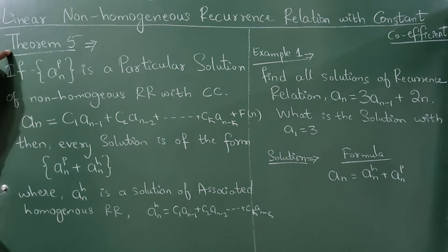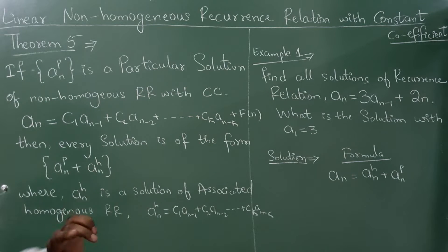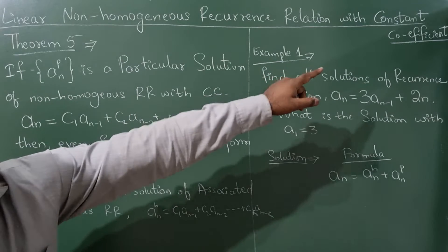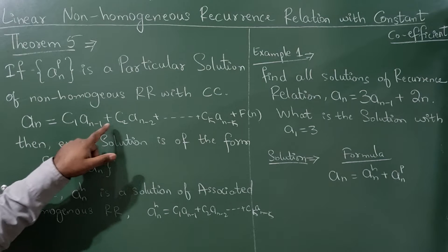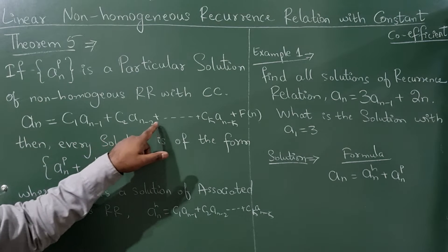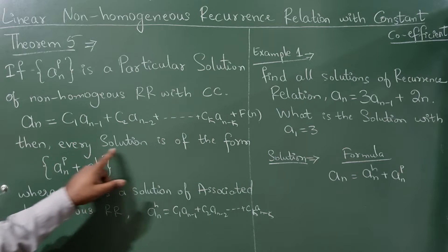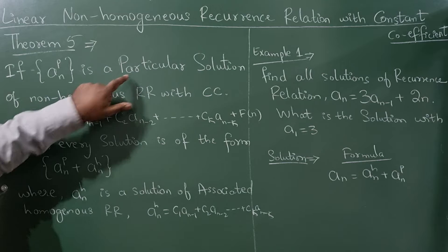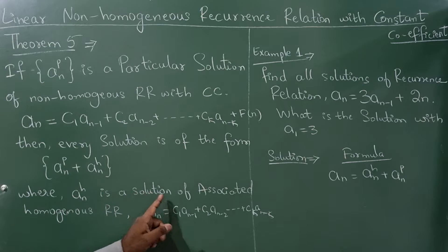Here, Theorem phi. The statement is: if aₙᵖ is a particular solution of a non-homogeneous recurrence relation with constant coefficients, where aₙ = c₁aₙ₋₁ + c₂aₙ₋₂ + ... + cₖaₙ₋ₖ + f(n), then every solution is of the form aₙᵖ (the particular solution) plus aₙʰ, where aₙʰ is a solution of the associated homogeneous recurrence relation.